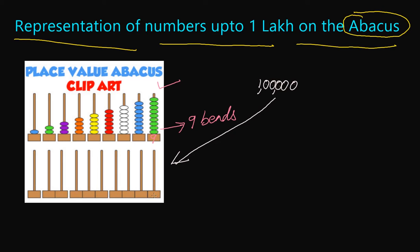On the abacus we have the same place values. This is the ones place, then the tens place, the hundreds place, the thousands place, the ten thousands place, and this is the lakhs place. In the number one lakh, on the ones place we have zero, so we don't have to put any bead there.